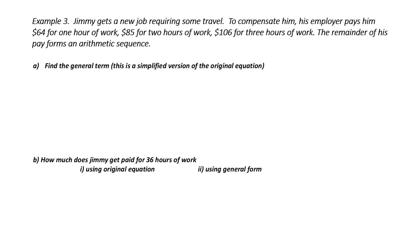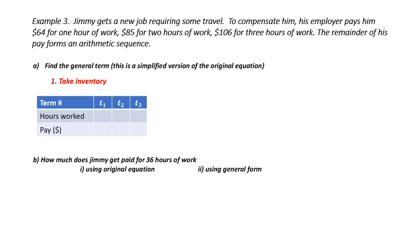Example 3. Jimmy gets a new job requiring some travel. To compensate him, his employer pays him $64 for one hour's work, $85 for two hours' work, and $106 for three hours' work. The remainder of his pay forms an arithmetic sequence. Let's organize this in a chart. Term 1: one hour worked, paid $64. Term 2: two hours, paid $85. Term 3: three hours, paid $106. The common difference is 21.